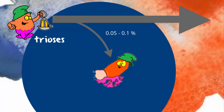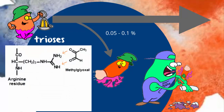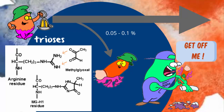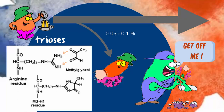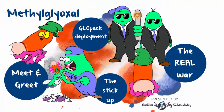The problem with these methylglyoxals: they're sticky. They stick onto lysine and arginine residues of proteins, aging the proteins, and it's quite an ordeal to get them off. No worries — cells deploy the glyoxalase system.